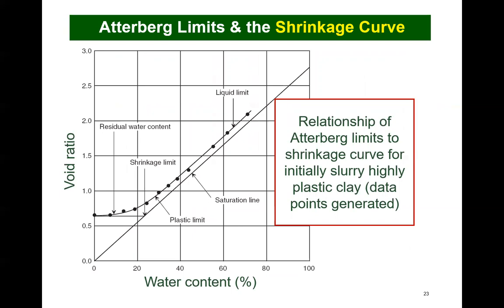The Atterberg limits have been adopted as the standard classification tool worldwide. The test procedures are somewhat crude but have stood the test of time. The soil is first remolded at a high water content and then allowed to dry, and a shrinkage curve can be plotted with void ratio versus gravimetric water content. As the plastic limit is reached, the rolling of a thin thread of soil begins to crumble — indicating the air entry value of the soil. Complete oven drying corresponds to a soil suction of about 1 million kilopascals.